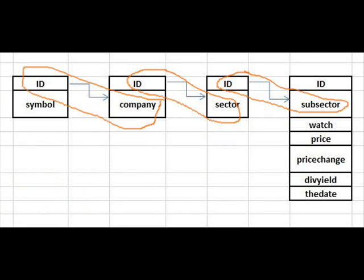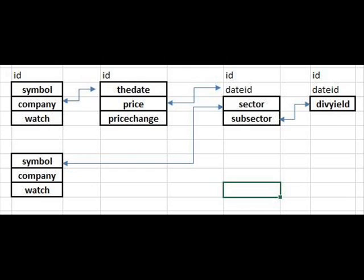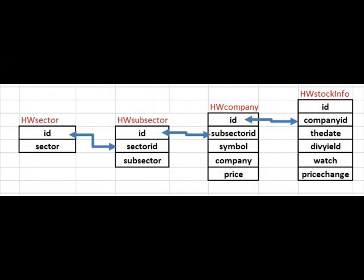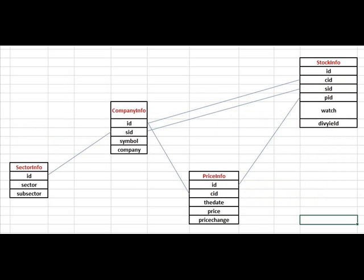I don't know why we have these three separate tables here. And why is ID tied to subsector? That doesn't really make sense. Again, the links don't make any sense — when does the company equal the date? The price equal the date ID? The subsector equal the div yield? This one looks pretty good, actually. I might move the watch over here and the price over there. Basically, a watch is what you do to a company; prices are each week. This one's also not too bad — just move a couple little things and we're in good shape.